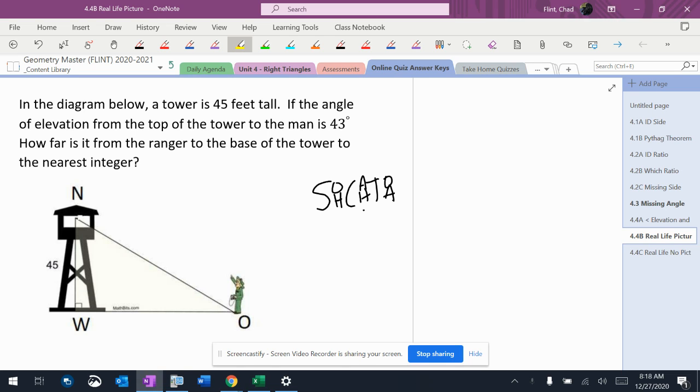So the tower is 45 feet. That's already on there. It says the angle of elevation would be over in this corner. Horizontal up is 43. How far is the ranger to the base of the tower? So the base is another word a lot of times for bottom. Okay, so we want to know how far that is.